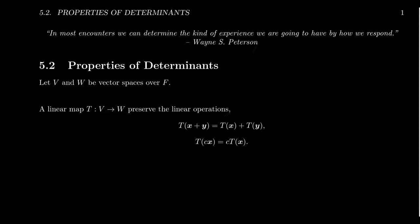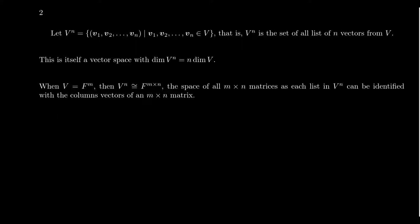Suppose we have two vector spaces V and W over the same field F. A linear map between V and W is a map that preserves the vector operations. So we're looking for maps that preserve vector addition — the image of a sum is the sum of the images — and it also preserves scalar multiplication. It doesn't matter whether we scale before or after the transformation; we get the same thing. That's a linear transformation.